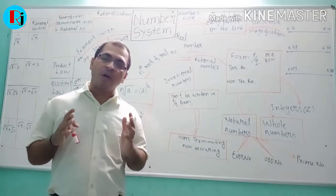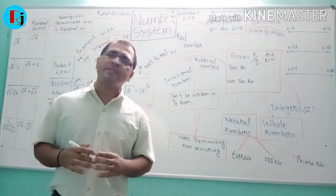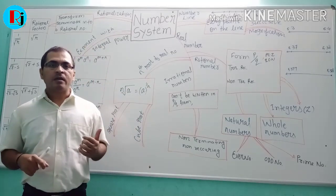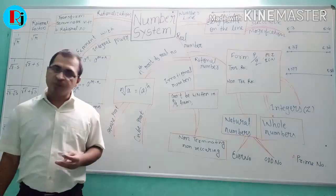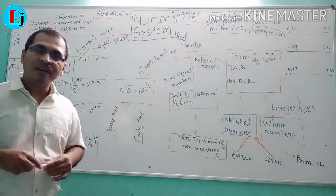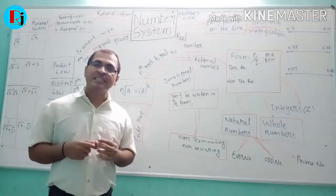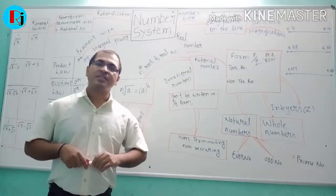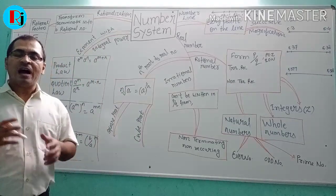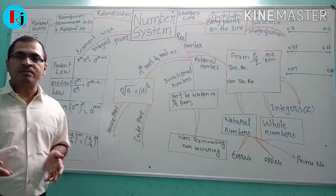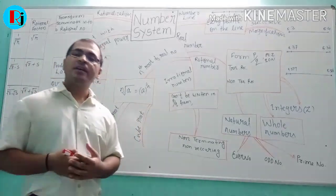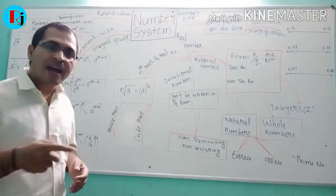Today we will discuss only the very basic concepts about number systems. We will include natural numbers, whole numbers, rational numbers, integers, irrational numbers, even numbers, odd numbers, and how to rationalize any term. Let us see all these topics with examples and definitions.